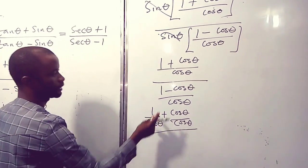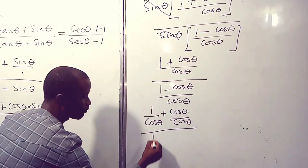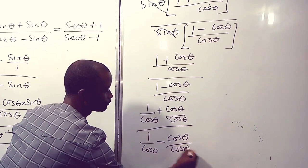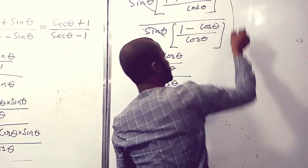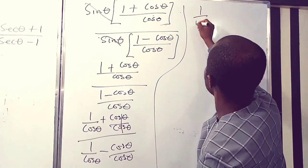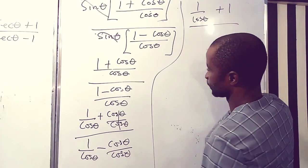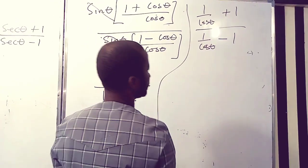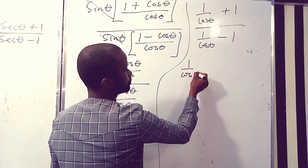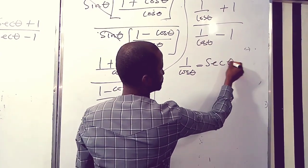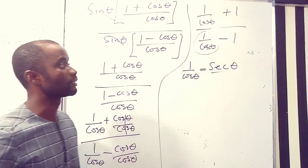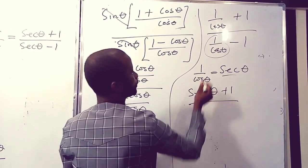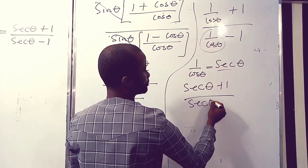Breaking the division line, we have one over cos theta plus one, all over one over cos theta minus one. Remember from our identities that one over cos theta equals sec theta. Substituting this value, in the numerator we have sec theta plus one, and in the denominator we have sec theta minus one.